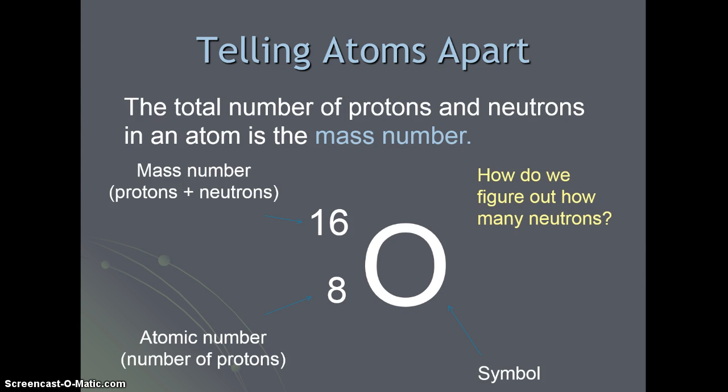So how can we figure out how many neutrons are in this particular atom? Well, if mass number is protons plus neutrons and the atomic number is protons, if we subtract the two, we can calculate the number of neutrons.